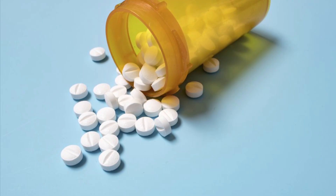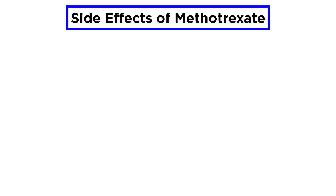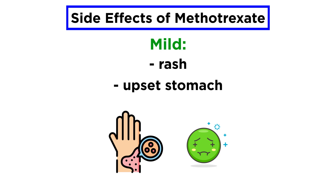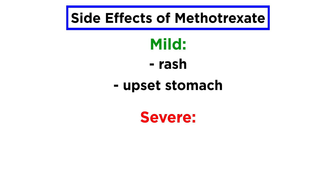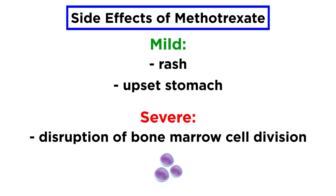The doses of methotrexate prescribed for the treatment of RA are much lower than those used in chemotherapy. However, side effects still occur even at low doses. Patients may experience mild side effects such as rash and upset stomach, but some side effects can be more severe. Methotrexate can disrupt the ability of cells in the bone marrow to divide, which must be closely monitored by a physician during treatment through regular blood tests.